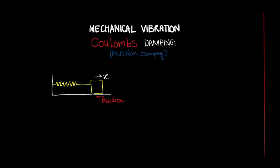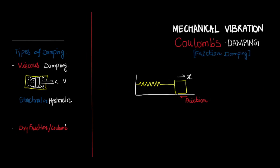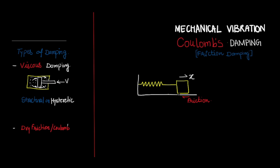Before we study Coulomb damping, let us understand the different types of damping. Conventionally we have three different types of damping. The first is viscous damping, which occurs because of fluid friction, and this is the most common type of damping we consider when we study vibration.